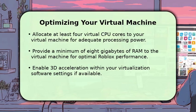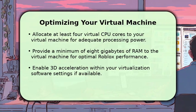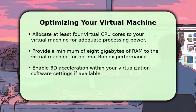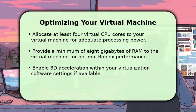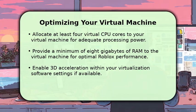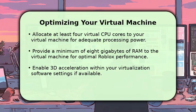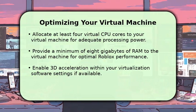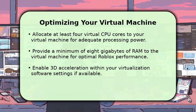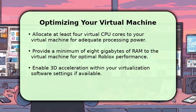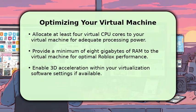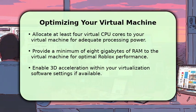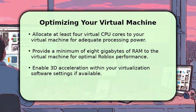For best performance, allocate at least four virtual CPU cores to your virtual machine. Also, provide a minimum of 8 gigabytes of RAM from your host system for smooth gameplay. Remember to enable 3D acceleration within your virtualization software's display settings if that option is available. After installing your guest operating system, ensure you update its display drivers to their newest versions. This configuration greatly enhances your Roblox experience.